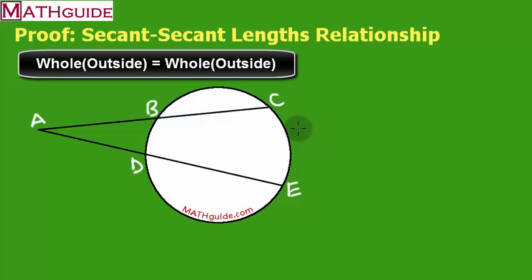So I want to prove that the whole distance times the outside, that would be AC times AB. There's one secant line product.